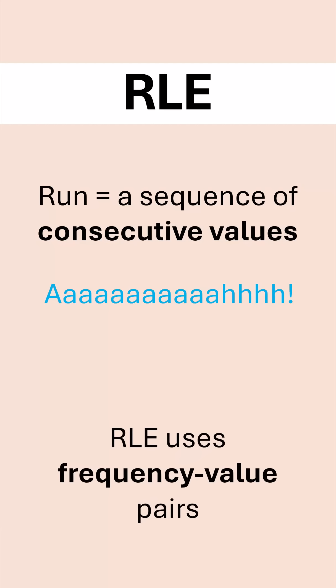And RLE will try and compress this data into a different form. The form it uses are frequency-value pairs. So for every character, it will start by listing its frequency. How many times does it occur?